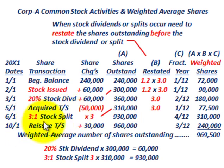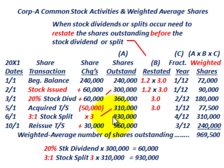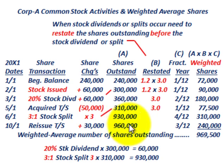On October 1st, our last transaction, we reissue treasury stock — 30,000 shares. Prior to that reissuing we have 930,000 shares outstanding, plus the 30,000 reissued treasury stock, giving us 960,000 shares outstanding. That takes care of calculating shares outstanding for each of those transaction dates.